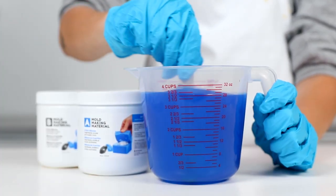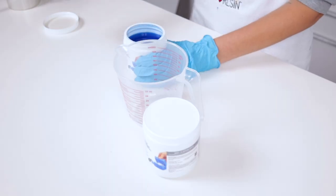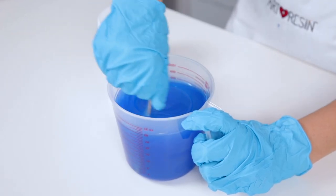Then grab a stir stick and mix it all together. Mold making material conveniently comes in two colors so that you'll know when you've thoroughly mixed the solution when the color is consistent.